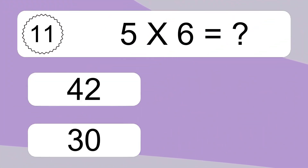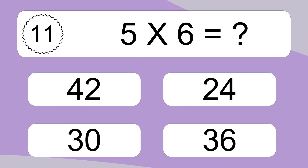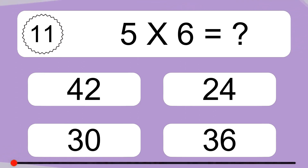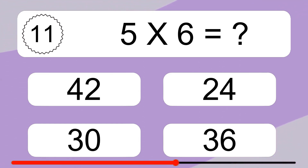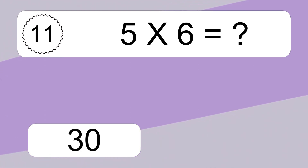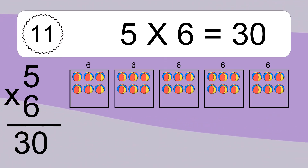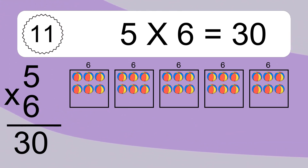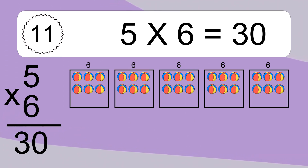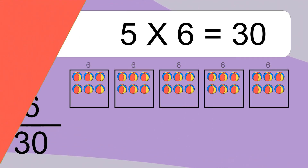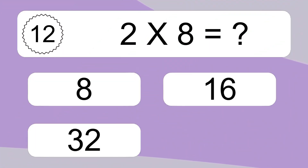5 times 6 equals what? 5 times 6 equals 30. We have 5 boxes, and each box has 6 colorful balls inside. If you count all the balls in all the boxes together, you will have 5 times 6 balls. This equals 30 balls.